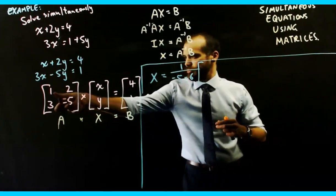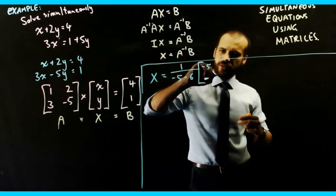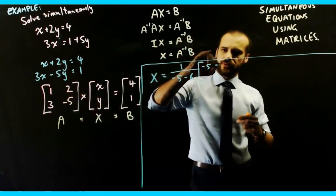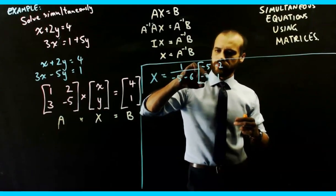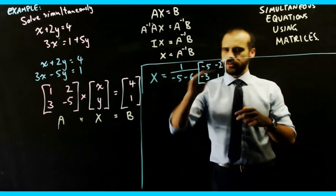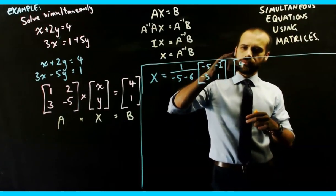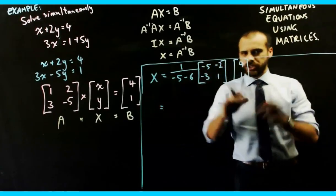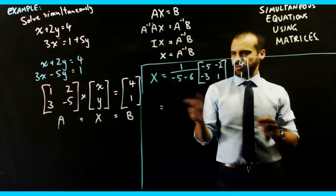And then swap those elements, negative 5, 1, and make those elements negative. And we're going to multiply that by matrix B. I might just do a little bit of that grunt work and come back.